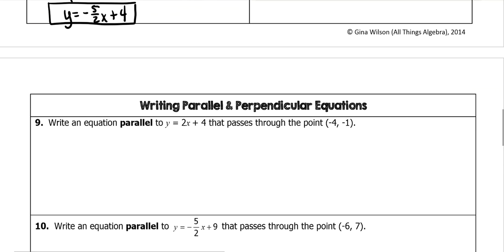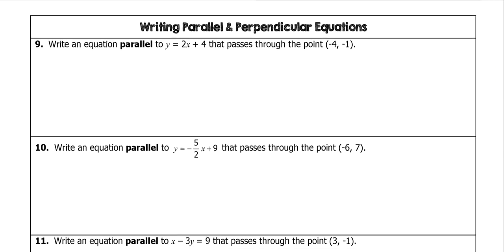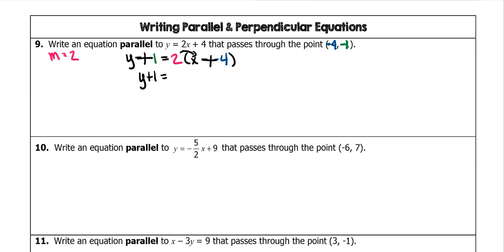Now we need to write an equation parallel to a given line that passes through a given point. Since it's parallel, the slope is the same — slope equals 2. Using Y1 equals negative 1 and X1 equals negative 4, plug into point-slope form. Minus a negative becomes plus, so distribute the 2 to get 2X plus 8, then subtract 1. Y equals 2X plus 7.